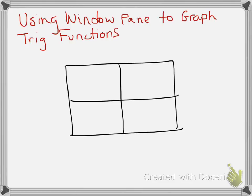So let's talk about what the different parameters of the window pane are. When we've been doing the window pane, our left side is our beginning and the right side is our end. So the distance from left to right represents our period. Remember, our period equals 2π over b. So when you're doing your window pane, if you calculate 2π divided by b in your equation, then that's the distance from start to finish.